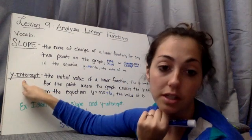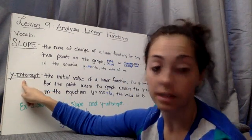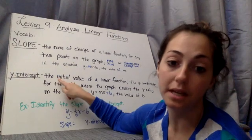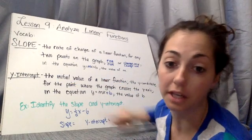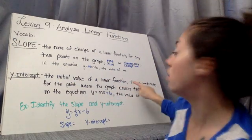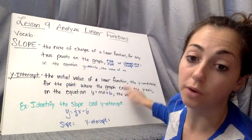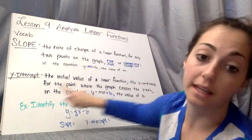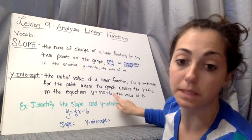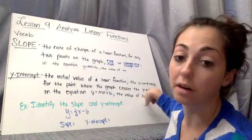The next definition term is y-intercept. The y-intercept is the initial value of a linear function. It also is the y-coordinate for the point where the graph crosses the y-axis. And in the equation y equals mx plus b, the value of b.